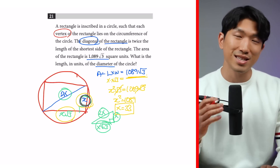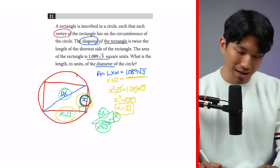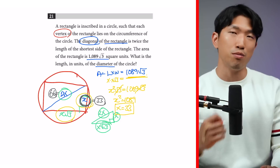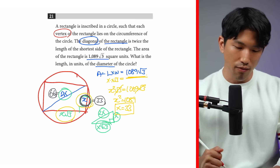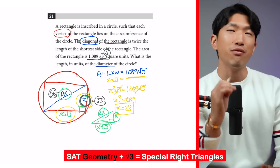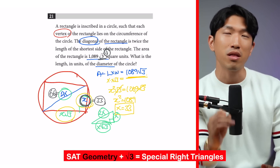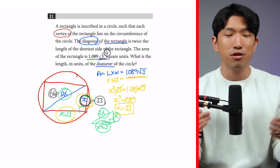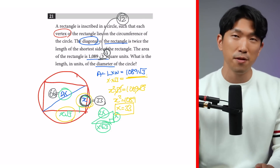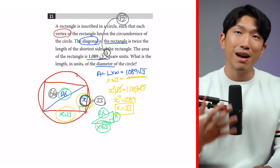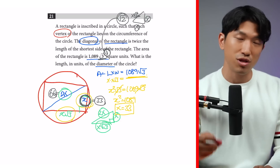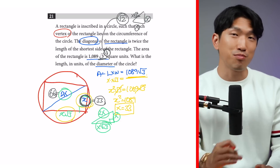Canceling root 3, x squared equals 1089, so x equals square root of 1089, which gives us 33. But 33 is just the shortest side of the rectangle — we're looking for the diameter, which is the diagonal. So if x equals 33, then 2x equals 66. That's our final answer. The main takeaway: anytime you see a radical 3 in a geometry question, there's a very high chance it involves special right triangles. Similarly, a radical 2 signals a 45-45-90 triangle with ratio x, x, x root 2.